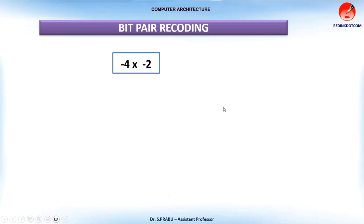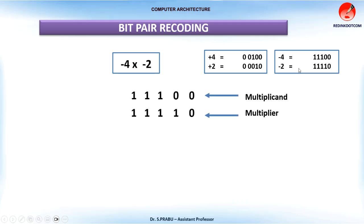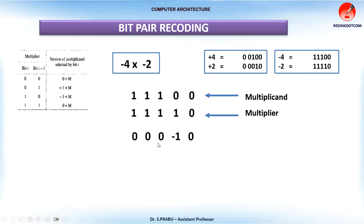Let's see one example: minus 4 times minus 2. First, understand how to represent these two values as negative numbers. Write the positive number first, then include the corresponding sign bit, then take the 2's complement for these numbers. Now I am going to multiply these two numbers. First I recode the multiplier value, and after recoding I get this result.